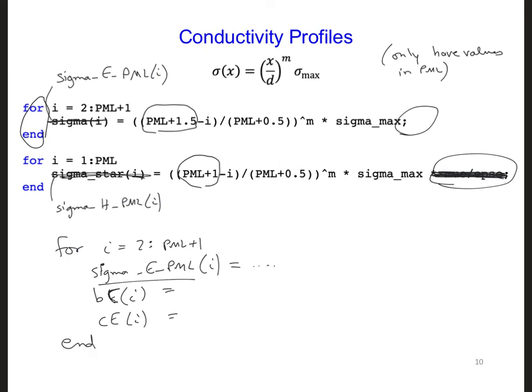And when we define the sigma H PML values, we can define the BH and the CH arrays in the same I loop as for the sigma H PML.